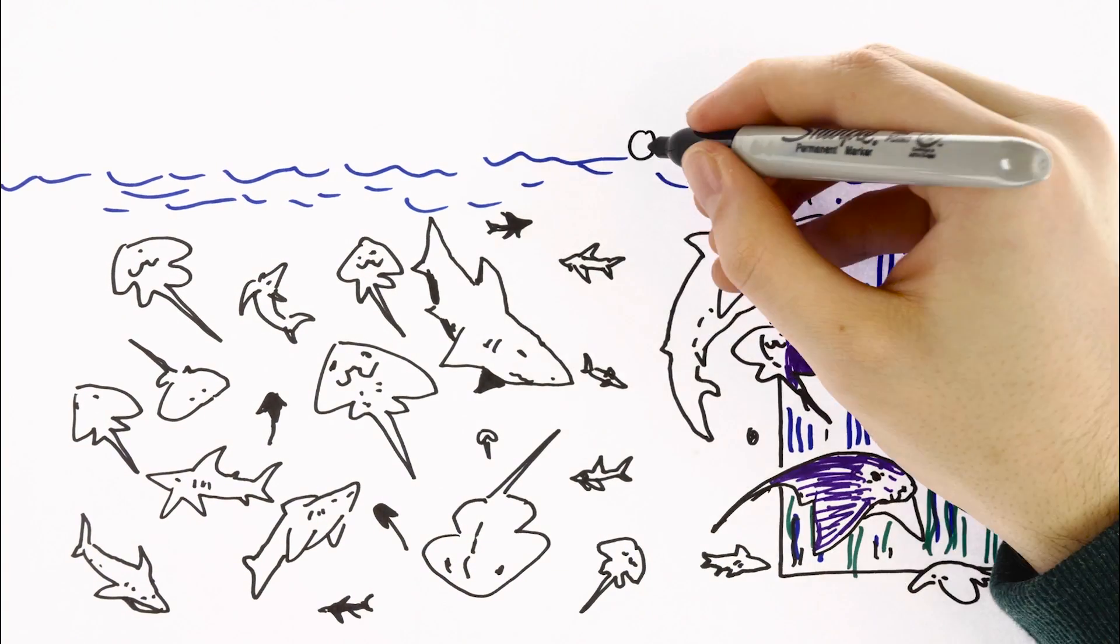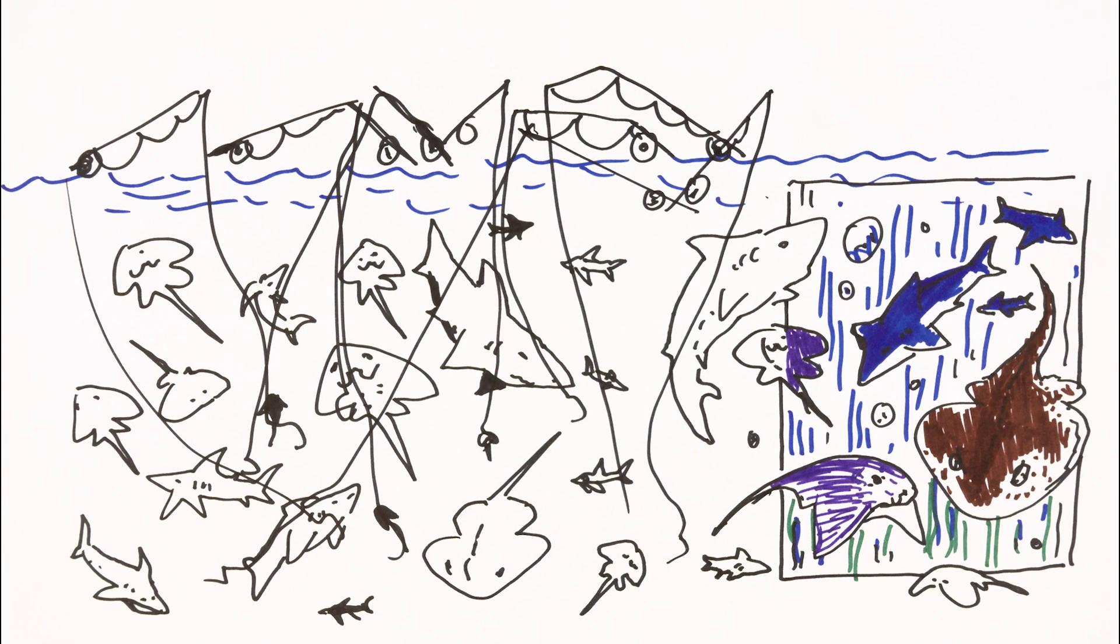In 2010, 97 million sharks and rays were killed. That's double the UK population and 97 million too many of course.